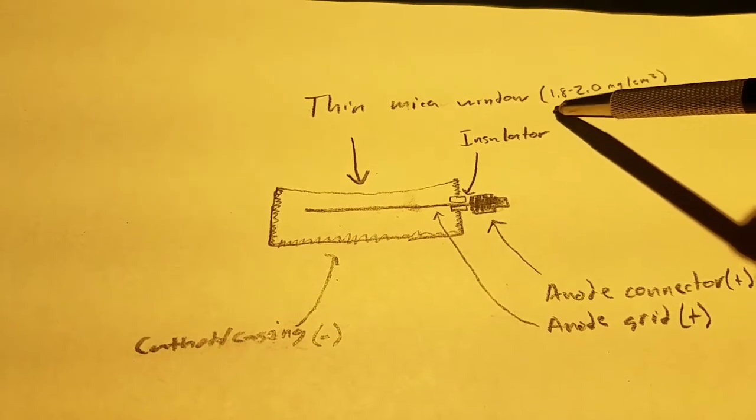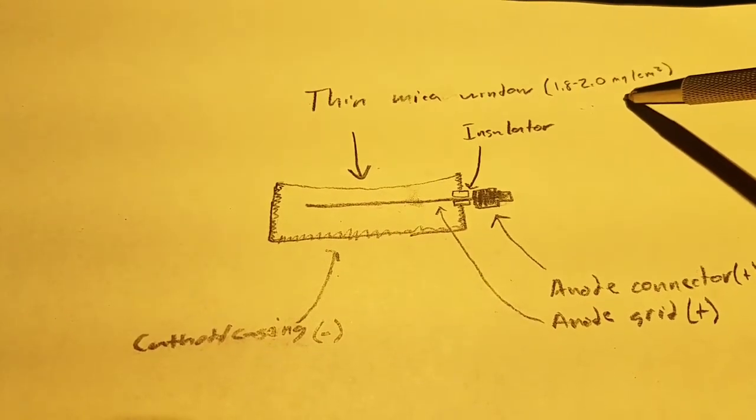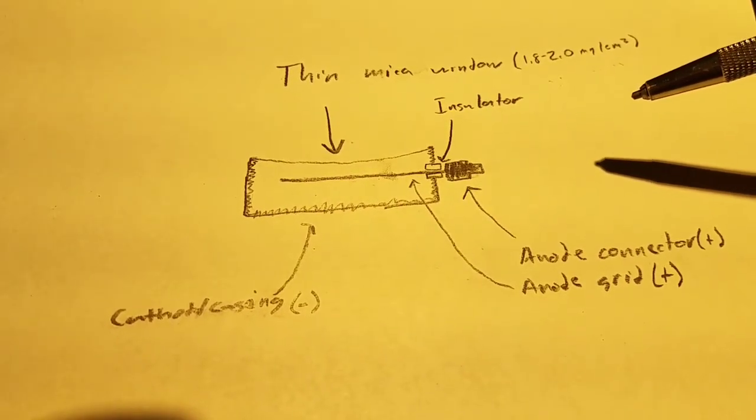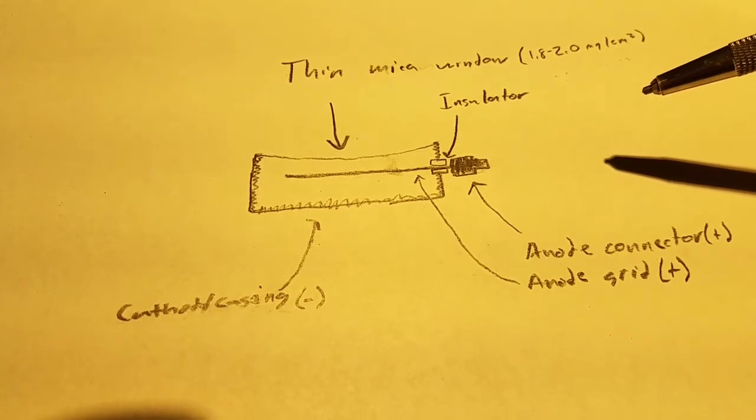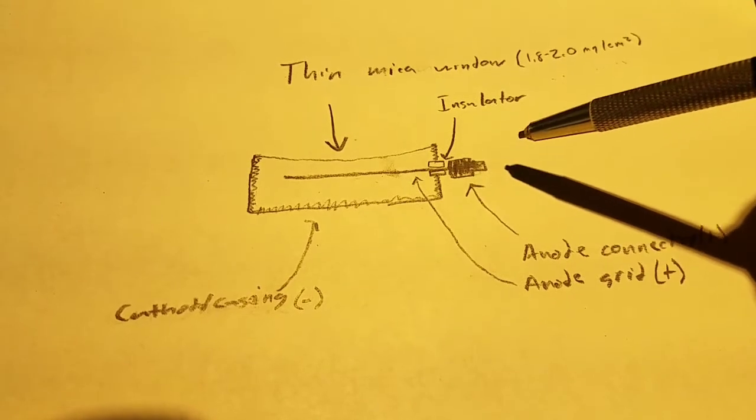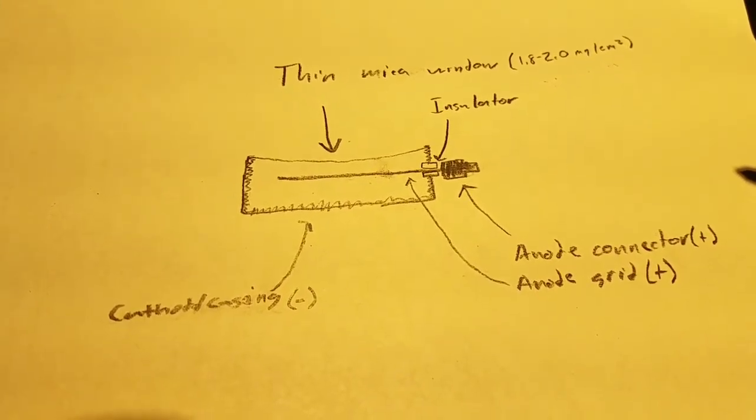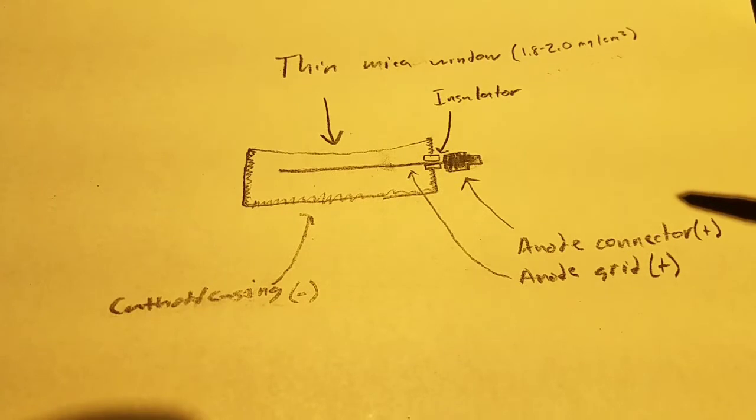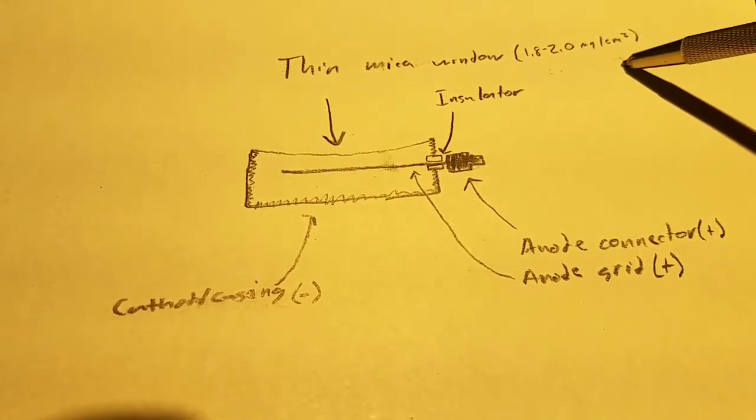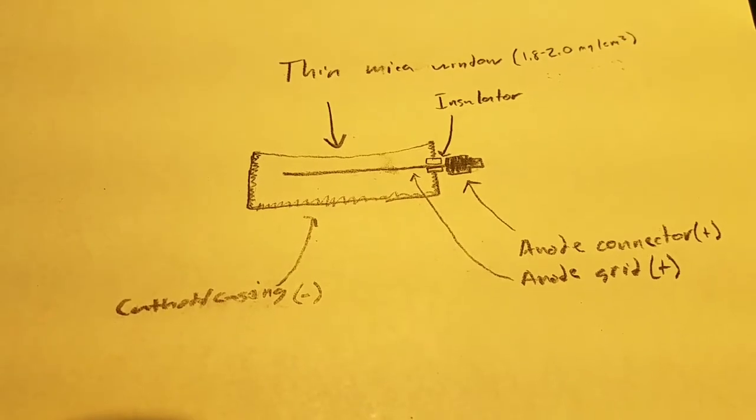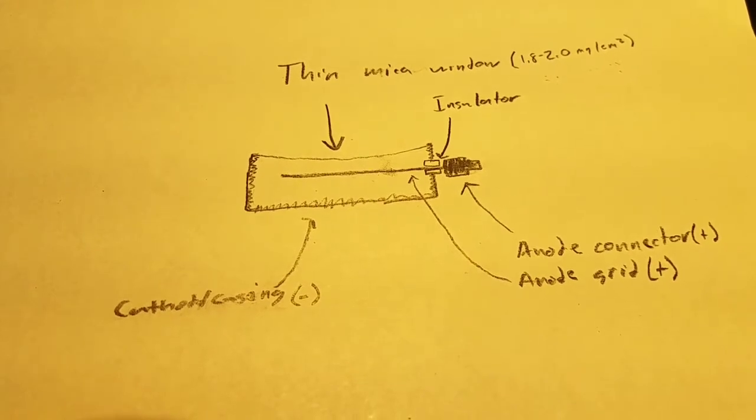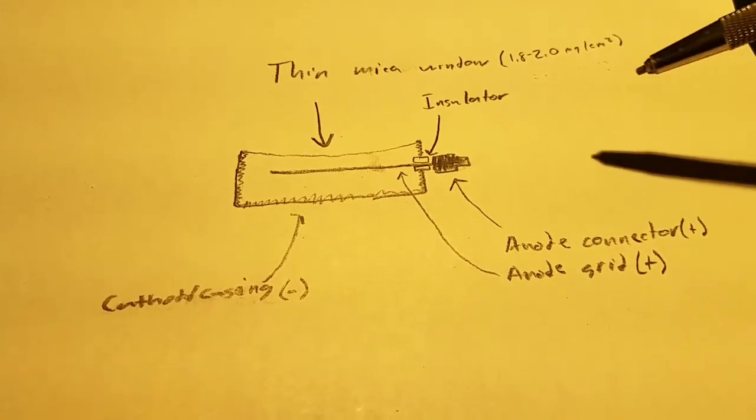To give you a sense of its density, it's 1.0 to 2.0 milligrams per square centimeter. That's mostly important because it determines what kind of particles are allowed through and at what energy levels and what percentages. This tube happens to be good for detecting alpha, beta, and gamma particles. At 1.8 to 2 milligrams per square centimeter, it can detect alpha particles starting at 2.5 MeV, which is actually decently energetic.